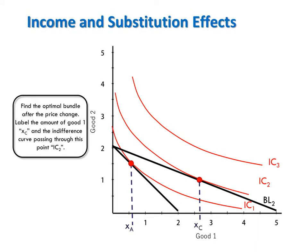Now suppose the price of the good on the x-axis decreases. A decrease in the price of x will rotate the budget line outward. The consumer's original chosen bundle, bundle A, is no longer optimal. It's still affordable but it's no longer on the highest possible indifference curve.